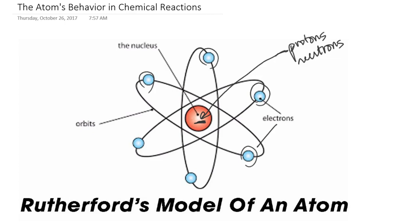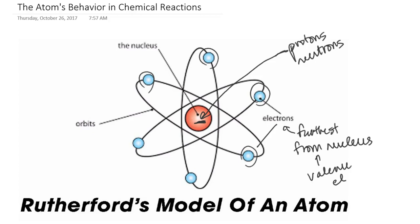Specifically, not only electrons in general, but those electrons that are furthest from the nucleus. Those electrons furthest from the nucleus are referred to as valence electrons. When we get good at determining what these valence electrons do within certain chemical processes, we start to understand chemical reactions a whole lot better.